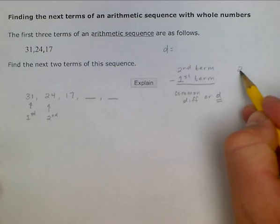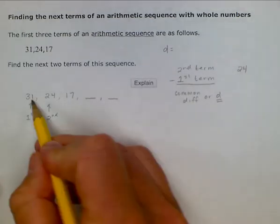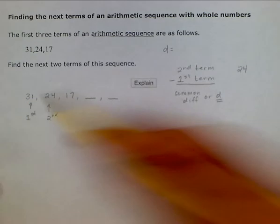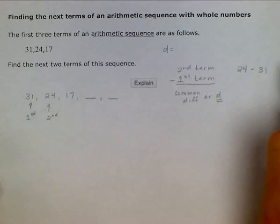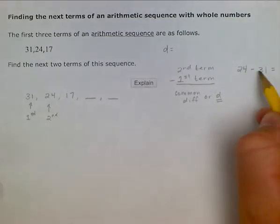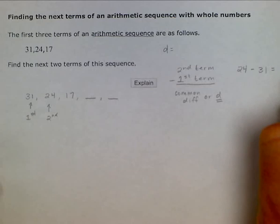...and then we would subtract from 24, we would subtract 31. And we see there that when we subtract 31 from 24, we're going to have a negative 7, negative 7.